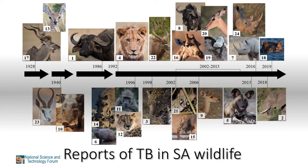In Kruger National Park, the introduction of M. bovis was suspected to have occurred through transmission between infected domestic cattle living on the border of the park and buffalo. The spread of bovine TB to additional wildlife species was documented in Kruger National Park from as early as the 1990s, including lions, cheetahs, greater kudu, baboons, leopards, wild dogs, and banded mongooses. In Hluhluwe-iMfolozi Game Reserve in KwaZulu-Natal, a similar spread was recorded, with the first case in a black rhinoceros in 1970 and buffalos found infected in 1986.